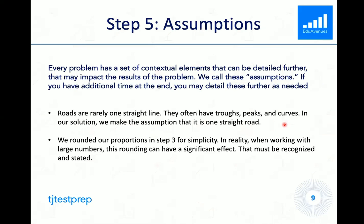So every problem has a set of contextual elements that can be detailed further. And these may impact the results of our problem. And we like to call these assumptions. If you have any additional time in the end, you may detail these further as needed. So here are some examples of assumptions for this problem. Our first one would be that roads are rarely one straight line. They often have peaks and curves. In our solution, we make the assumption that it is one straight road.